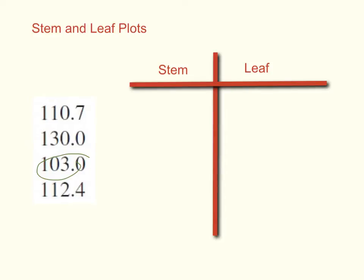So in 103, the tens column has a 10 in it. The ones column is what's going to go where my leaf is, so 103.0.